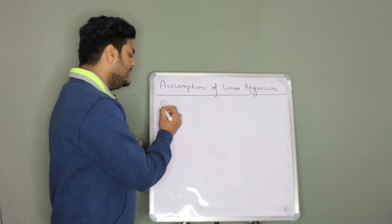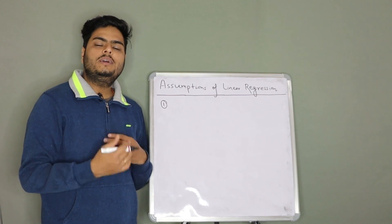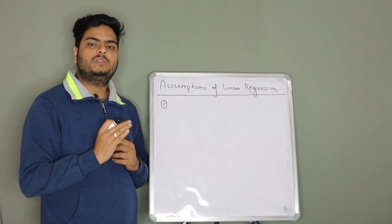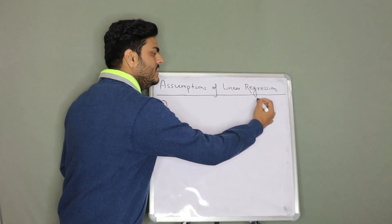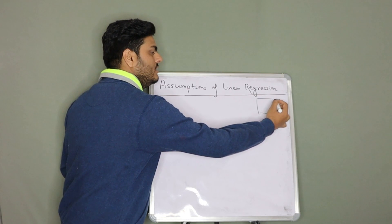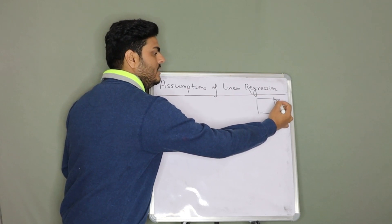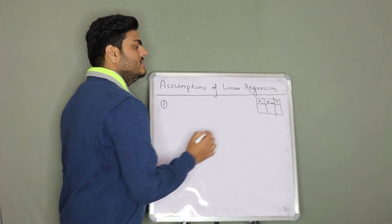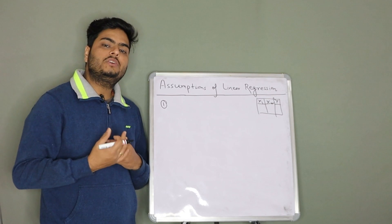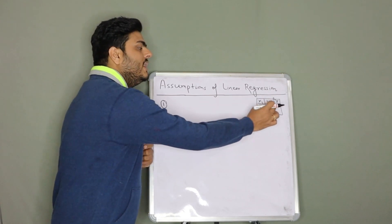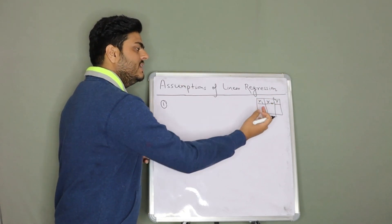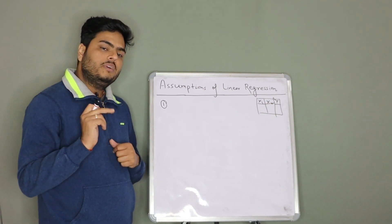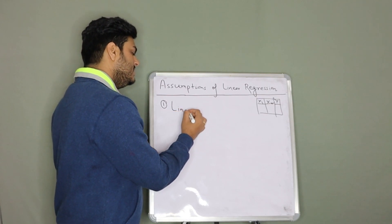The very first assumption of a linear regression model is the linear relationship between target variable and independent variables. For example, if this is my data, this is my target variable y and this is my x1, x2, etc. What should happen is there should be a linear relation between y and x1 at the same time y and x2. That is where we will be able to fit a line. So the very first assumption is linear relation.